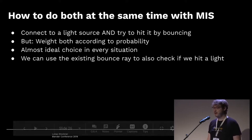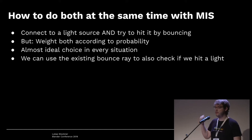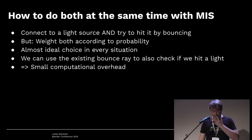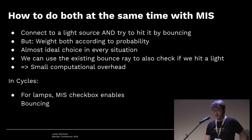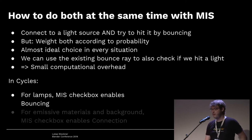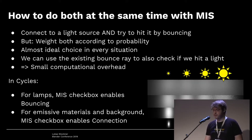We bounce anyway, so we can reuse the bounce ray to both check if we hit the light source and to find the next object. This means we don't get a significant slowdown from doing both, but we get significantly better noise reduction. In Cycles, lamps and materials have a multiple importance sampling checkbox. For lamps, the default is to only use the connection strategy since lamps tend to be small, but enabling the checkbox also does bouncing with MIS. With emissive materials, it's the other way around — and enabling MIS shows quite an improvement for mirror materials.